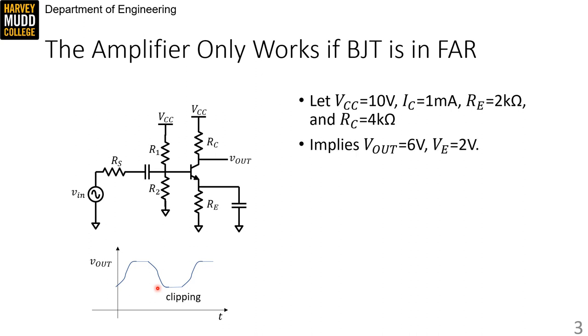We can then calculate the large signal voltages at a few important nodes. The large signal output voltage is given by VCC minus IC×RC, which is 6 volts, because 1 milliamp times 4 kilo ohms is 4 volts. The large signal emitter voltage is given by IC×RE, which is 2 volts. We're assuming IC is about the same as IE to make that calculation.